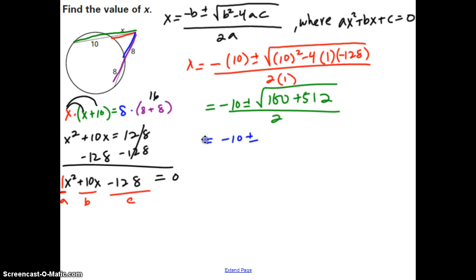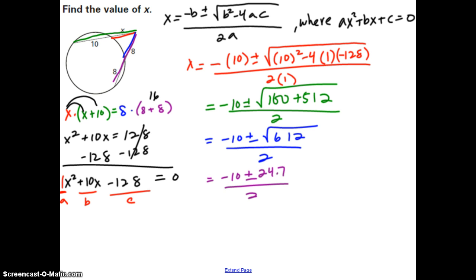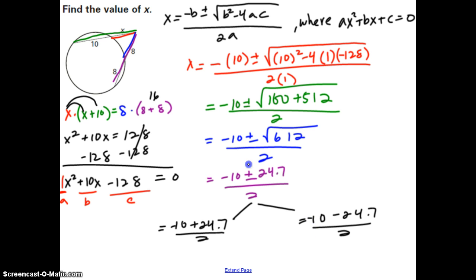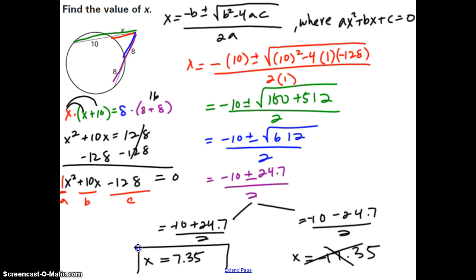We separate into two problems: (negative 10 plus 24.7) over 2 and (negative 10 minus 24.7) over 2. The first gives X equals 7.35, and the second gives X equals negative 17.35. Since length can't be negative, we discard that answer, so our final answer is X equals 7.35.